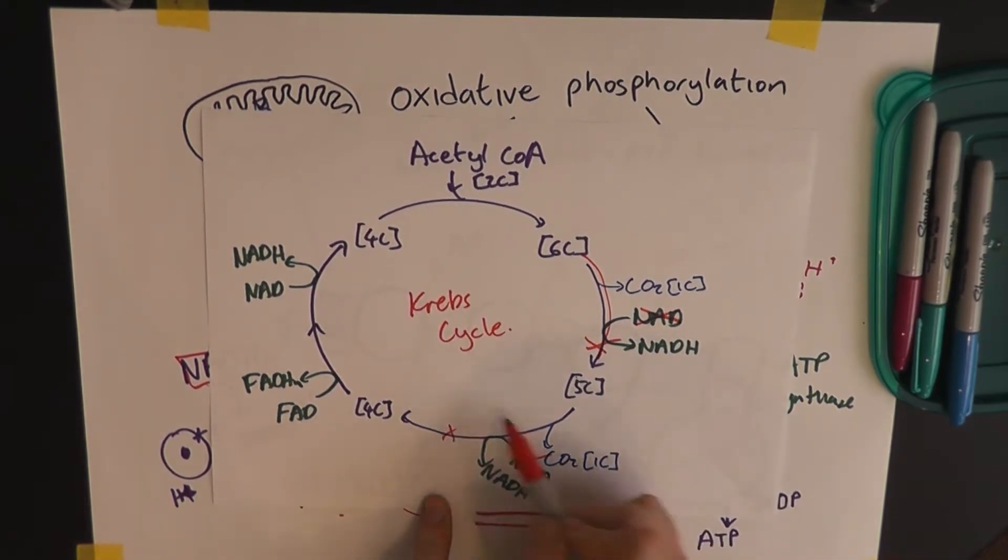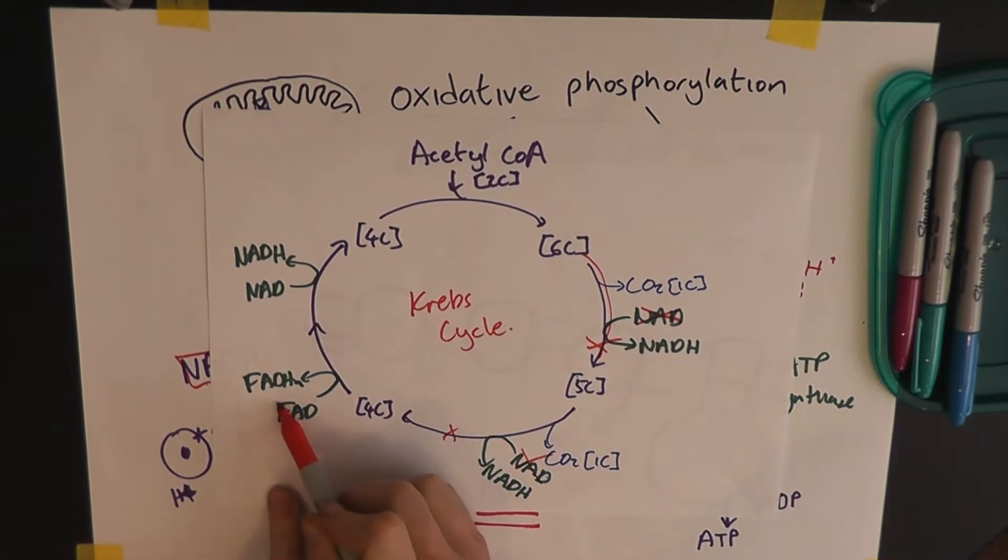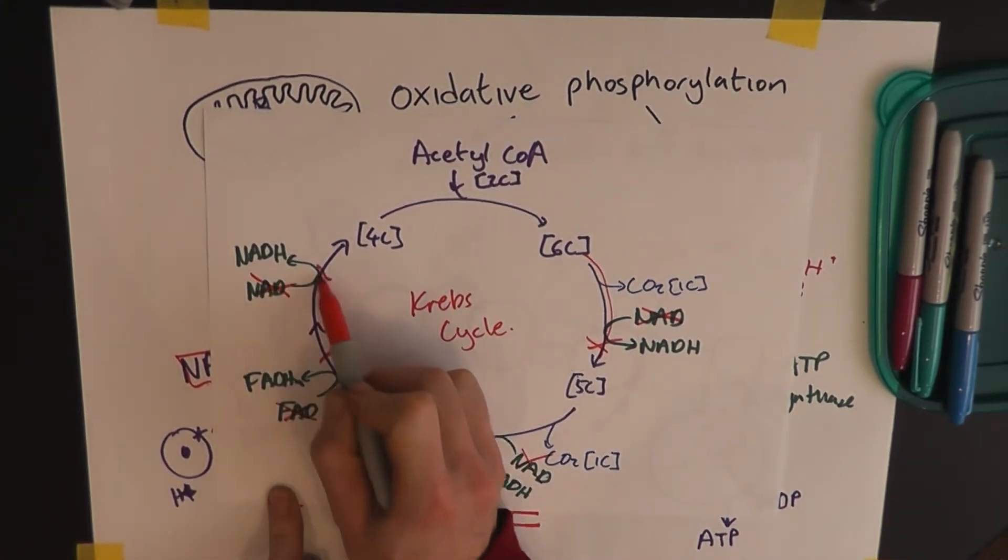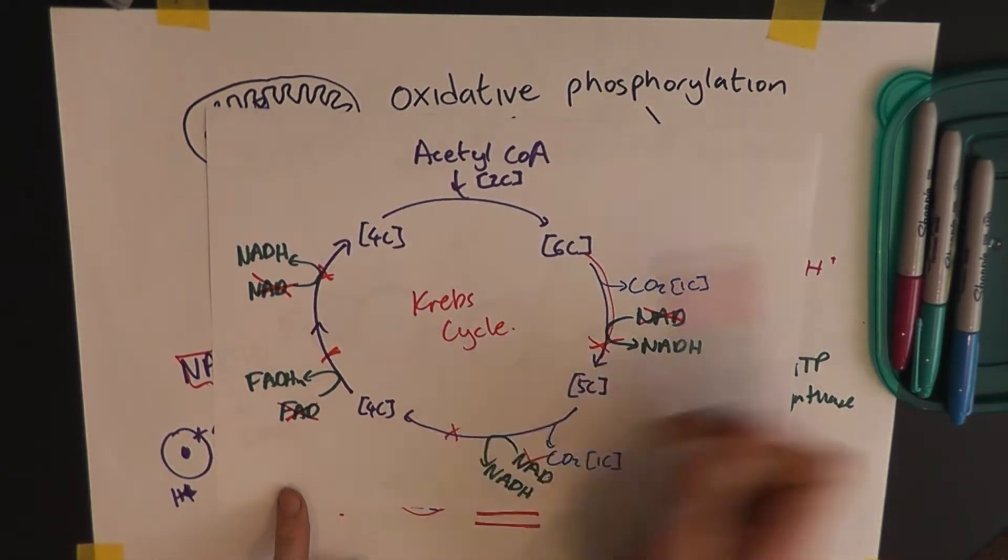No empty NADH, you can't do this. You don't actually get any FAD, which is another hydrogen carrier, you can't do this. And no empty NADH, so you can't do this. Which means the Krebs cycle just stops.